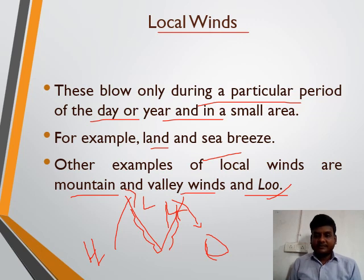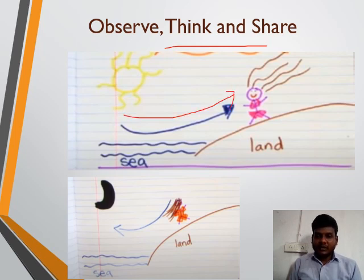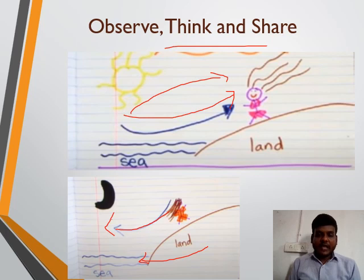Observe, think, and share: what do you see in this picture? This wind blows at a particular time — we call it local wind. Sea breeze moves toward the land, and land breeze blows toward the sea. This type of wind blows in a particular region — we call it local wind.